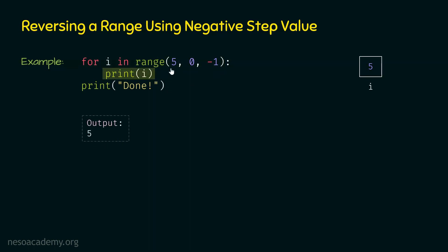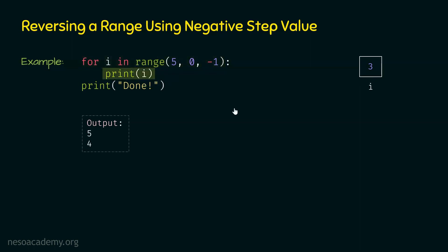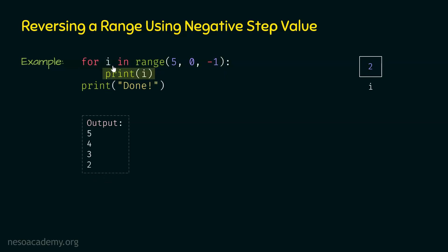Then variable i receives value 4, which is printed on the screen. Next, variable i receives value 3, which is printed. Then variable i receives value 2, which is printed. After that, variable i receives value 1, which is printed. This is the last value that variable i will receive. Variable i will not receive value 0 because 0 is the stop value and is never included in the result. Therefore, we are done with the for loop, and then 'done' is printed on the screen.